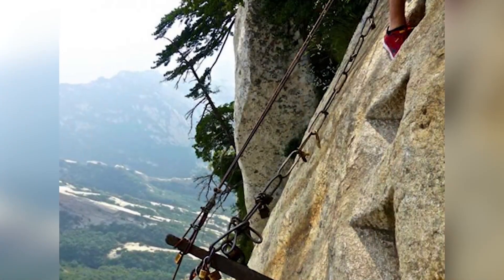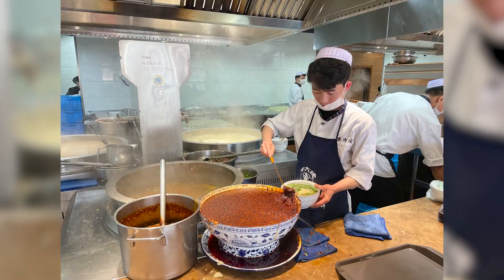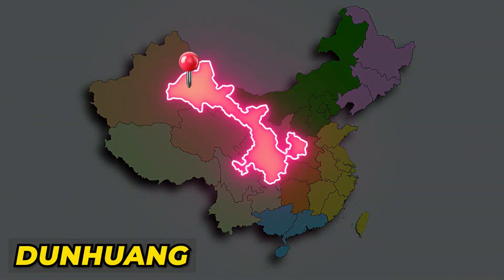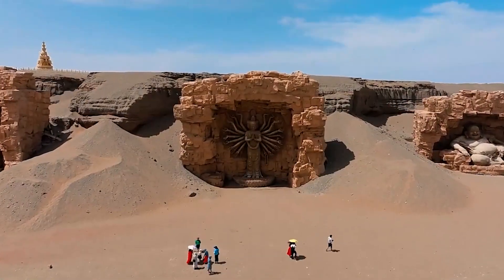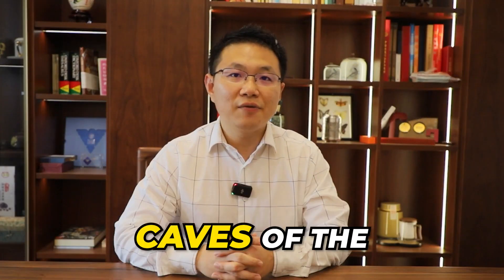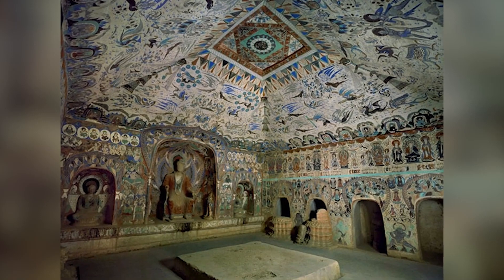Further west is Gansu province, with the lowest GDP per capita in China. Whenever Chinese hear about Lanzhou, its capital city, the first thing that comes to mind is Lanzhou Lamian, or Lanzhou Ramen — though locals refer to it as Niu Rou Mian, or Beef Noodle Soup. On the other side of Gansu is Dunhuang, an oasis located at a religious and cultural crossroads on the Silk Road. The most famous attraction is the Mogao Caves, also referred to as the Caves of the Thousand Buddhas — one of the three famous ancient Buddhist sculptural sites in China.